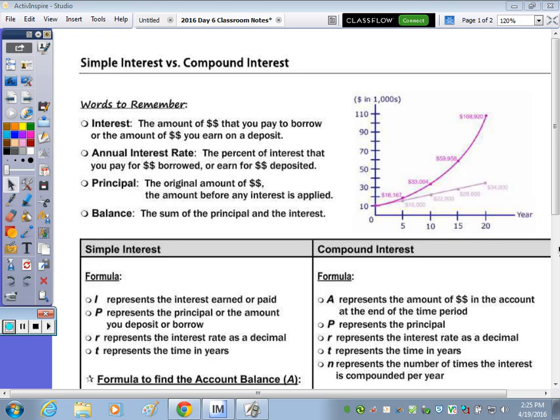At the top of the page, words to remember. Interest - it could be the amount of money that you pay if you're borrowing money from somebody or a bank, a credit union, or the amount of money that you earn out of deposits. So if you have an investment account, a savings account, you could potentially earn some interest. Your annual interest rate is the percent of interest that you pay for the money that you either borrow or that's deposited in your account.